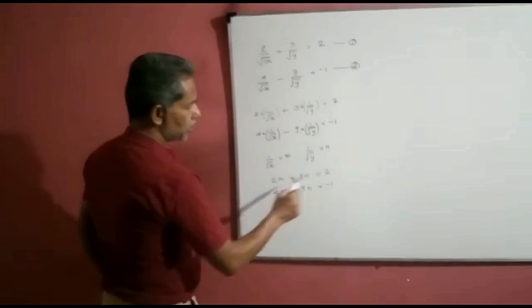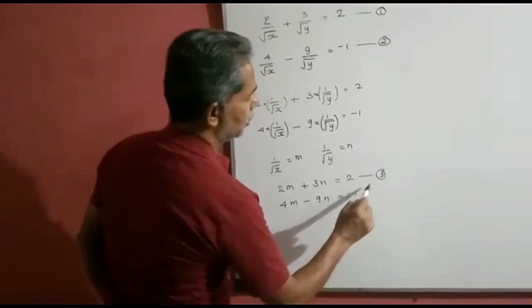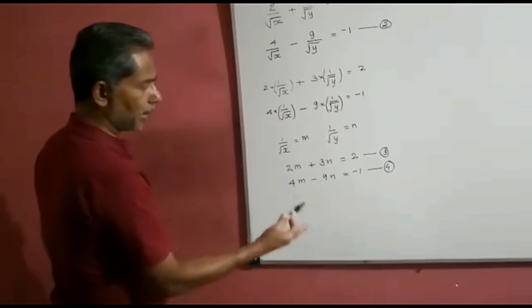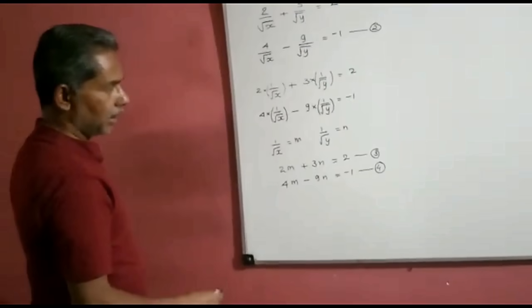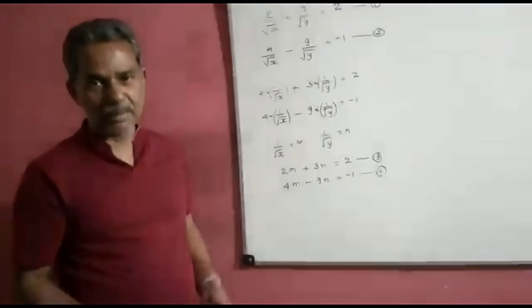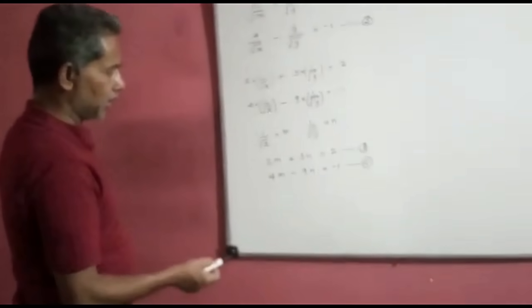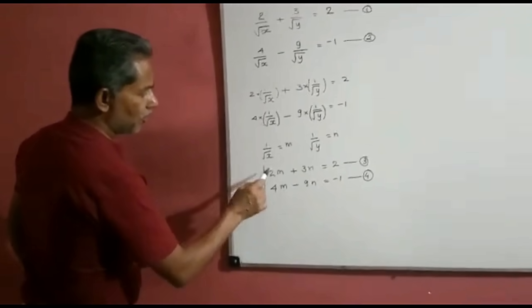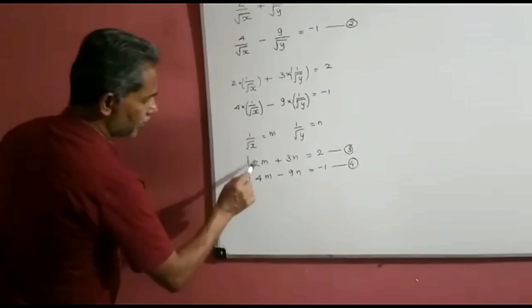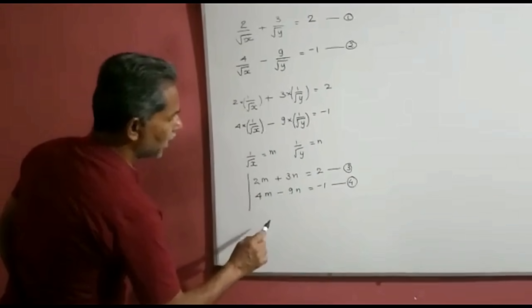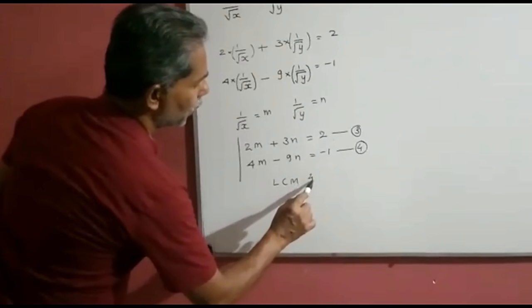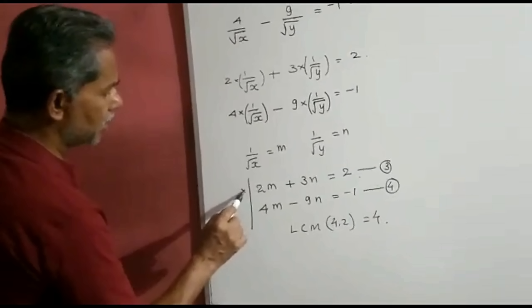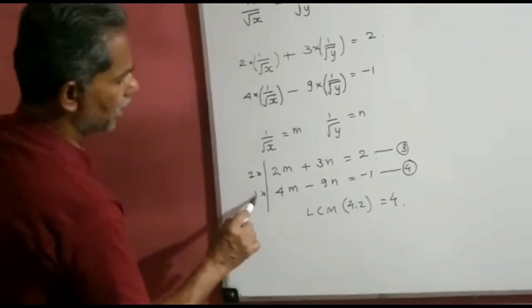We can solve these two equations in m and n. Let us mark these as equations 3 and 4. These two equations in two variables can be solved by any of the methods we have learnt earlier — either by substitution method, elimination method, or cross multiplication. Elimination method is preferred. So we take the LCM of the coefficients of m, which are 2 and 4, giving LCM as 4. We multiply the first equation by 2 and the second equation by 1.